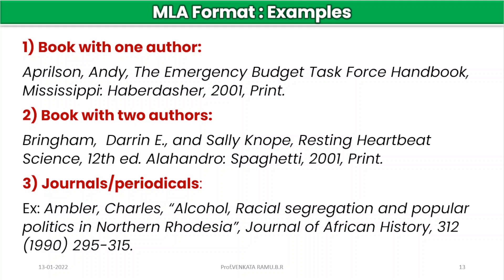Now let's come to the citation with respect to journals and periodicals. Here the author is Charles Ambler — written as Ambler, Charles, taking the last name first. The name of the article is 'Alcohol, Racial Segregation and Popular Politics in Northern Rhodesia.' The name of the periodical is 'The Journal of African History,' the volume is 31, issue 2, the year of publication is 1990, and the page numbers are 295 to 315.